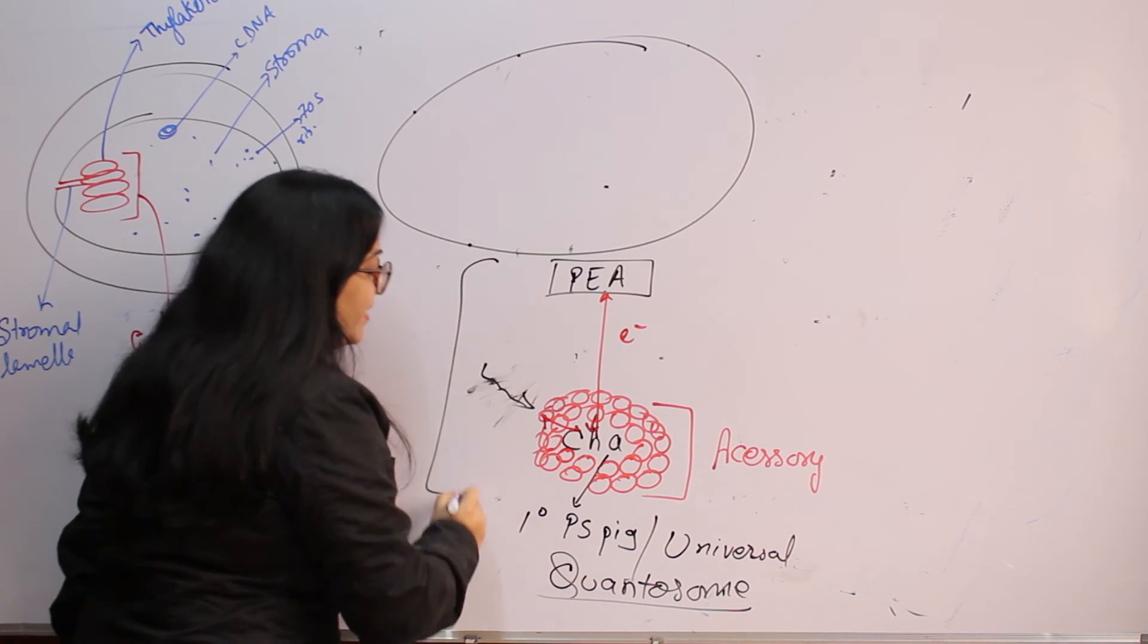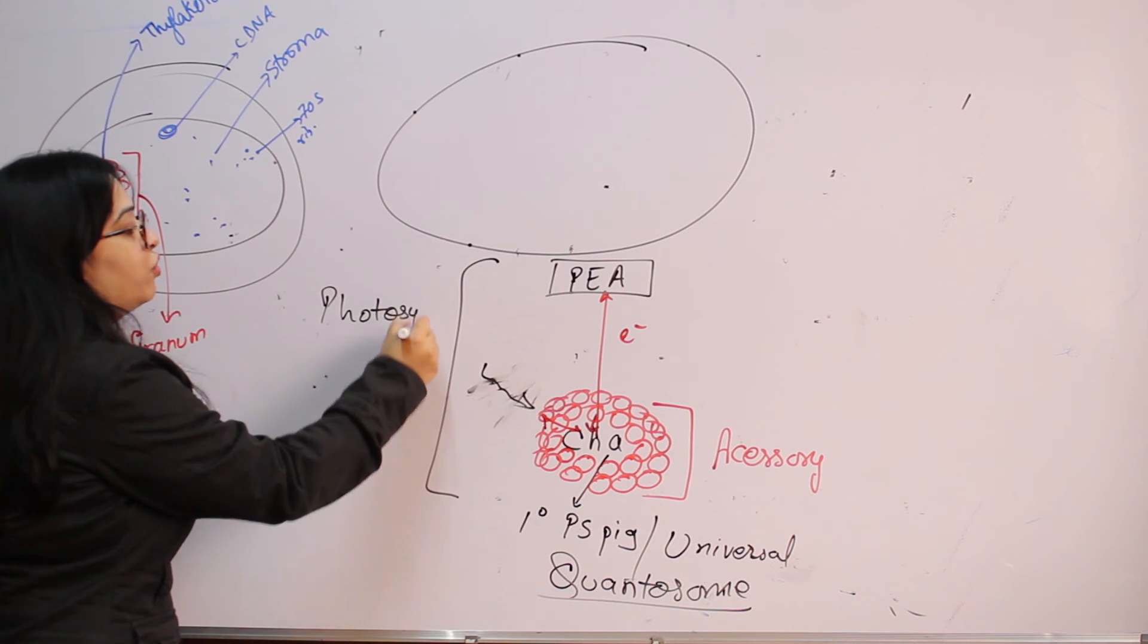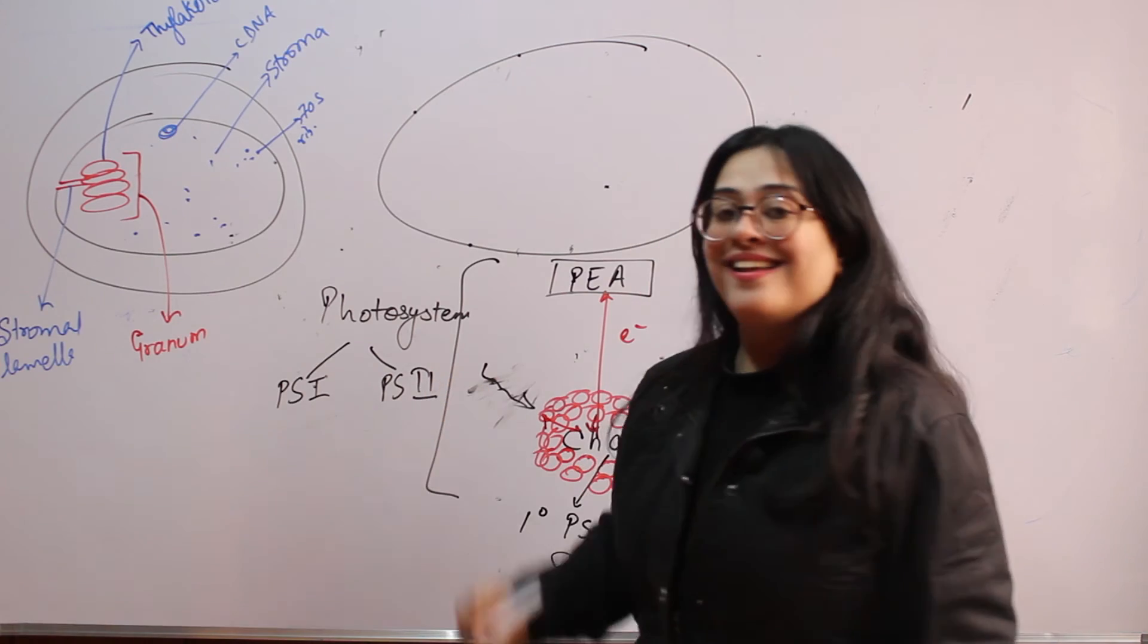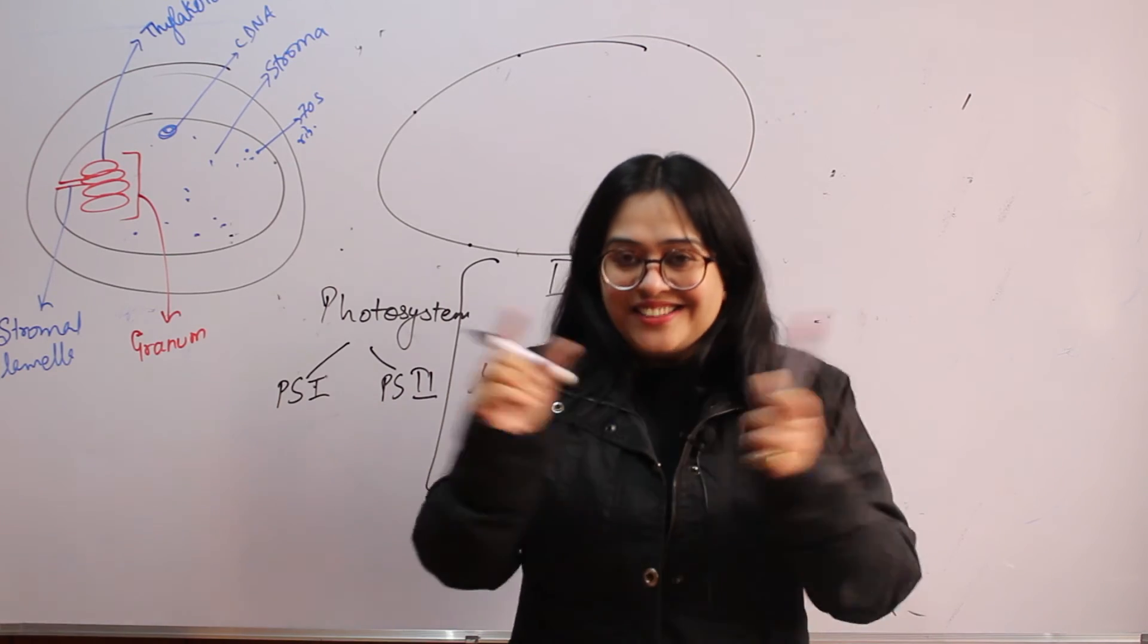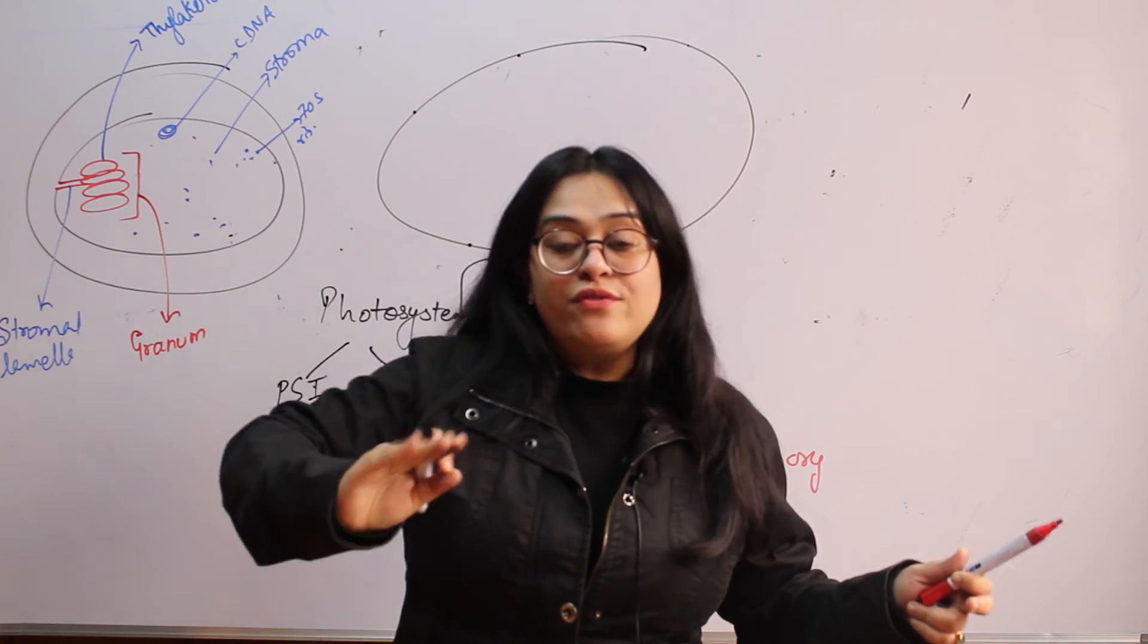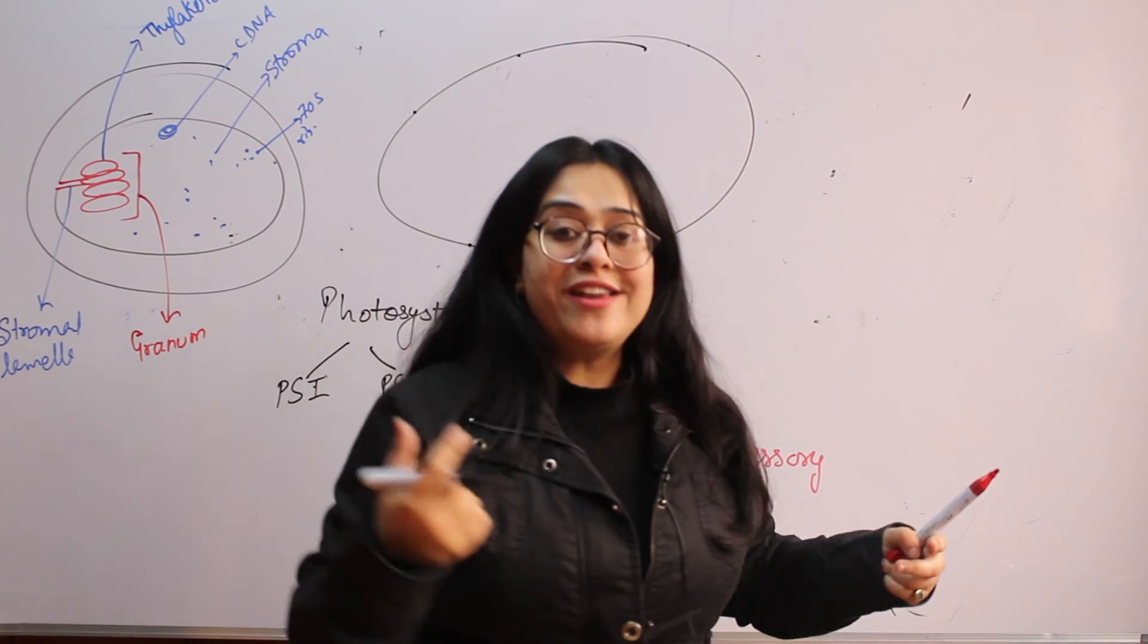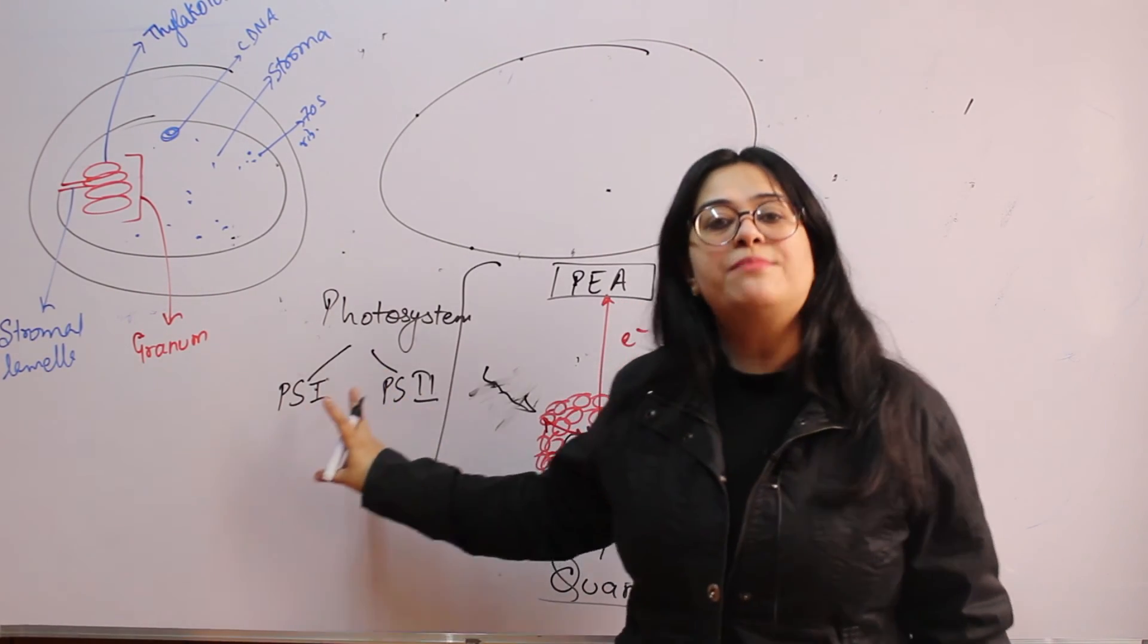This combination of quantosome and primary electron acceptor is called as photosystem. So in every plant there are two types of photosystem, photosystem 1 and photosystem 2. These are the two photosystems which are going to help in the light energy. In other words, they are going to trap light energy or the energy coming from sun and convert it into usable form of energy which is the energy currency, that is ATP and NADPH. So both of these things will be generated with the help of this photosystem 1 and photosystem 2.